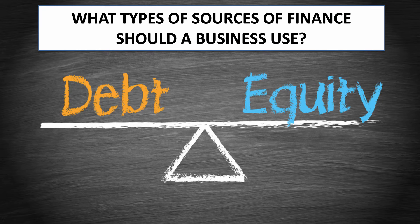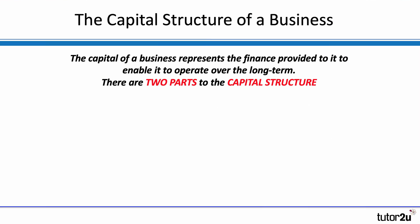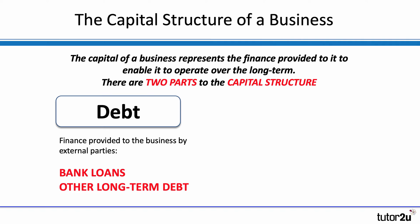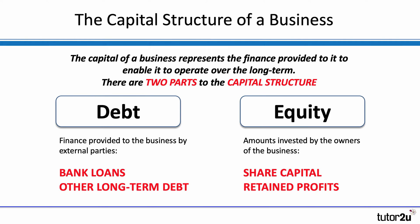The mix is determined by the difference between debt and equity, because there are different sources of finance which are debt and different sources of finance which are equity. So the capital structure of a business simply means the different parts — how much of it is debt and how much of it is equity.